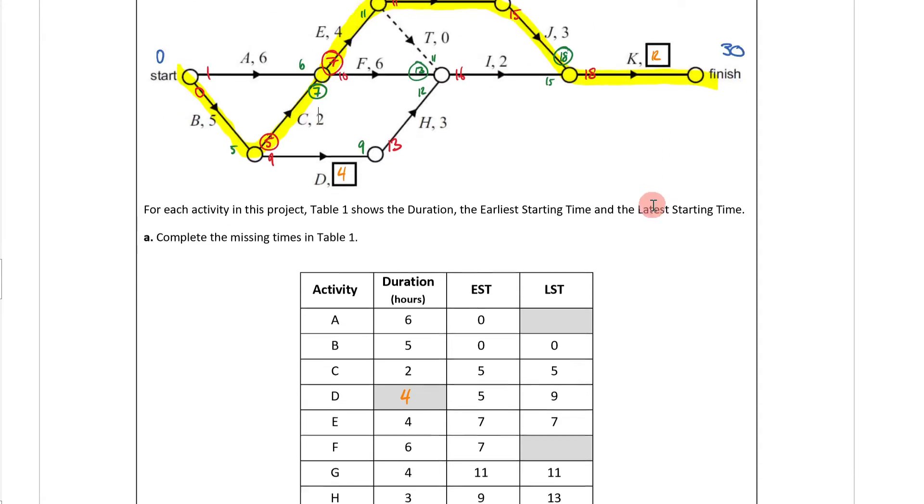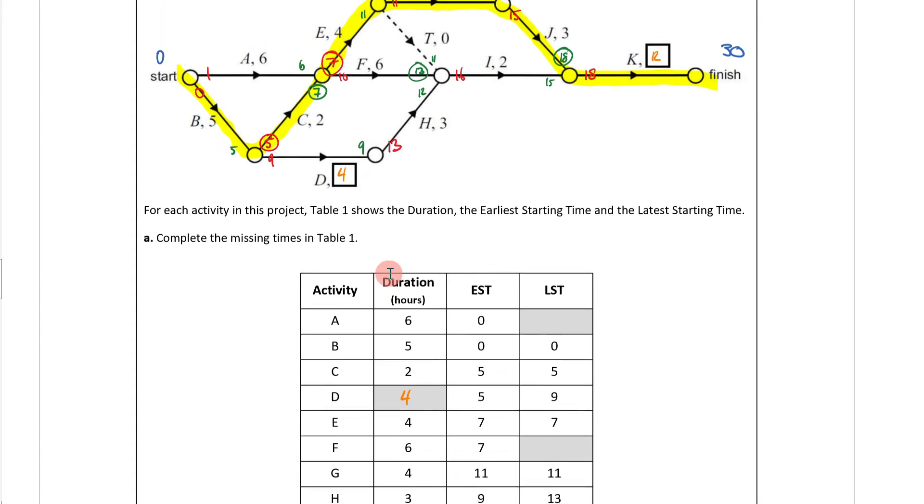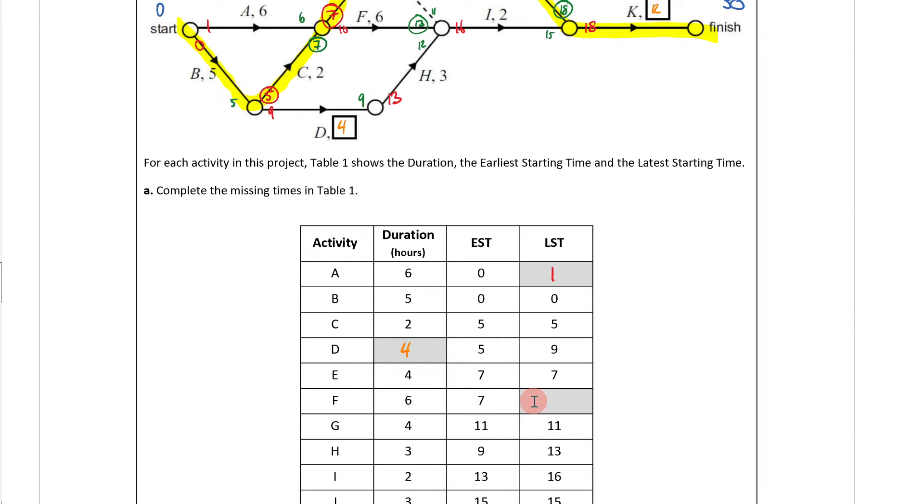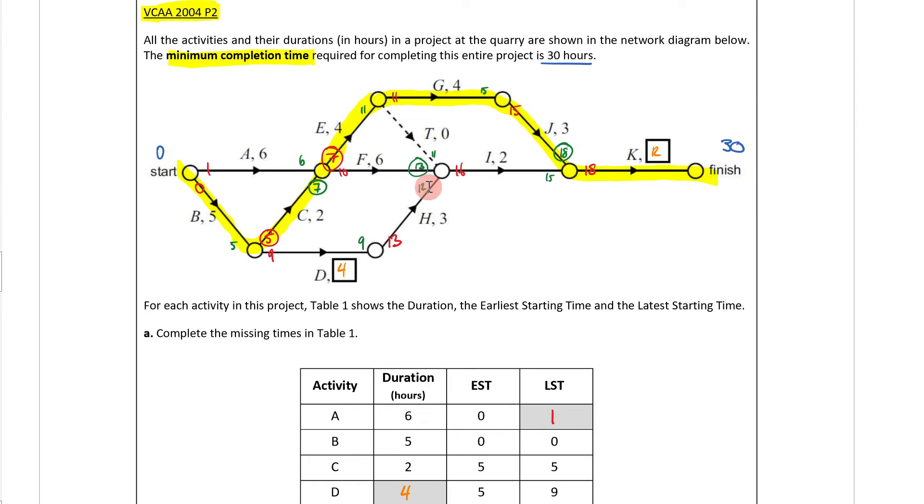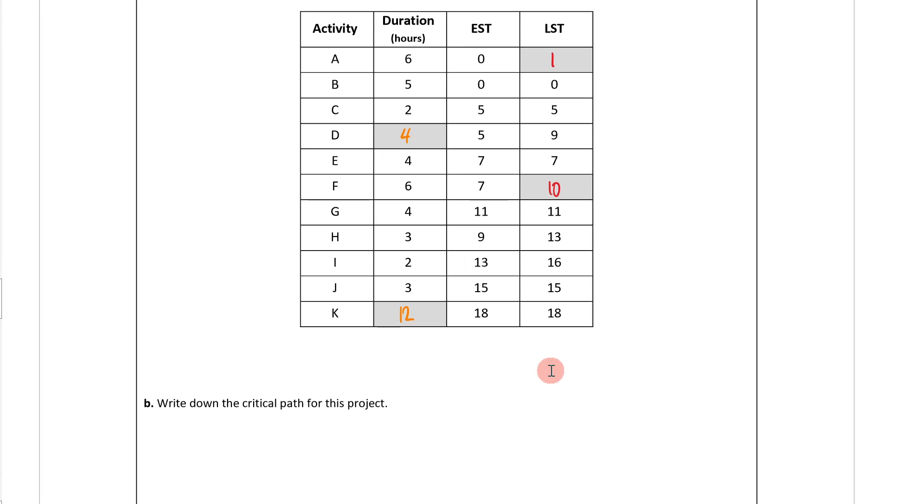Now let me finish by filling in all of these now. So my LST here is going to be, what's my LST for A? So here is A. My LST is going to be 1. For F, my LST, where is F? There it is. For F, my LST is going to be 10. And we're done.